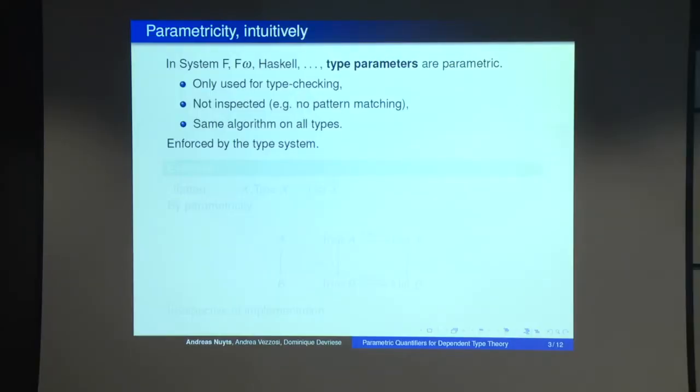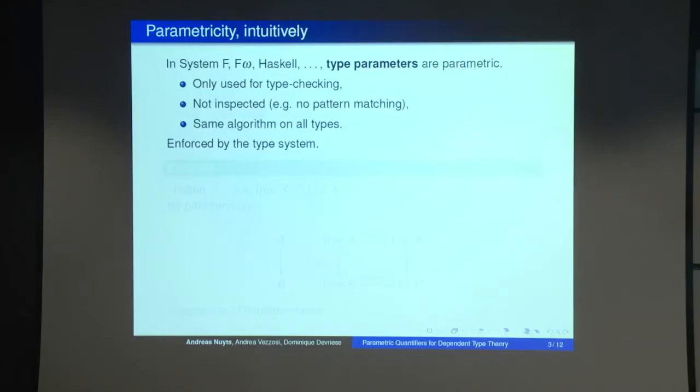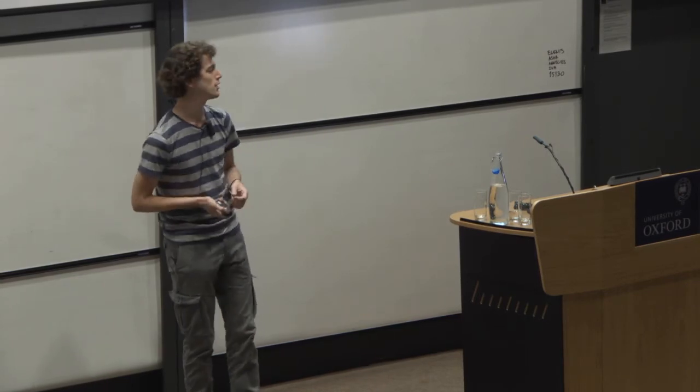Okay, so parametricity in system F of omega, etc. All type parameters are automatically parametric, so this means they are only used for type checking. They are not inspected. For example, you can do pattern matching. You can say if this function is instantiated on the booleans, I'm doing this. If it's instantiated on the naturals, I'm doing that. So you can't inspect the type, so by consequence, you're applying the same algorithm to any type you're instantiated on. And this is simply enforced by the type system, quite simply, because system F just doesn't give you anything to get material from the type level to the value level.